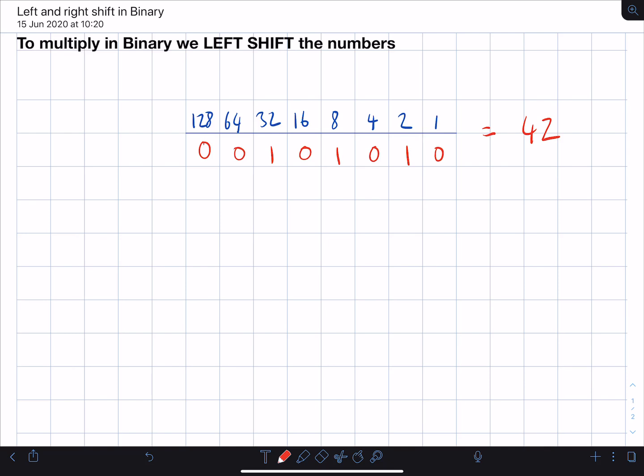If we want to multiply in binary, we do something called left shift. This essentially means we move the numbers this way, to the left. So here's how it works. Let's say we have the number 42 in denary, and there's 42 in binary.